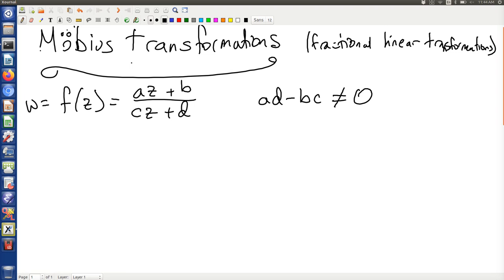Now, the thing to realize is that linear transformations are kind of Möbius transformations where c is equal to zero. So c equals zero gives you a linear transformation, or rather an affine transformation.